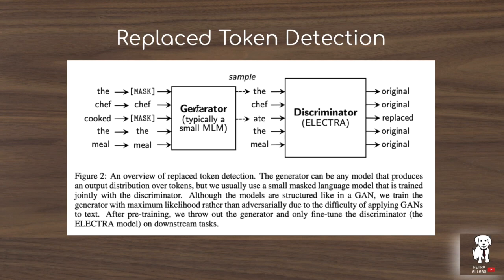The full pipeline is that the input sequence is masked out, then it goes through a lower capacity generator network and produces a new sequence. The discriminator — the large capacity transformer model we're looking to pre-train and then fine-tune for downstream applications like sentiment classification, natural language inference, or question answering — is tasked with predicting one or zero whether each token is from the original input sequence or has been replaced by the generator.